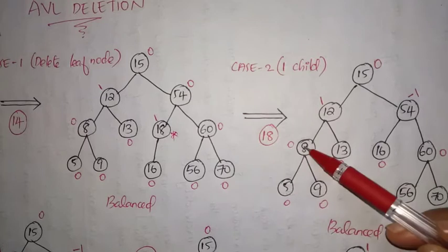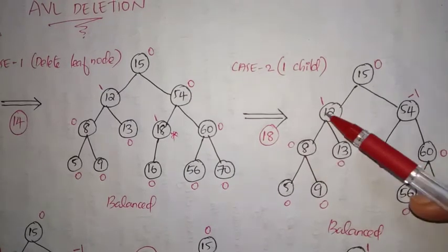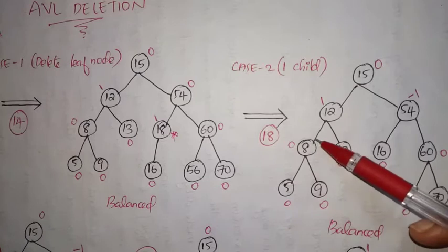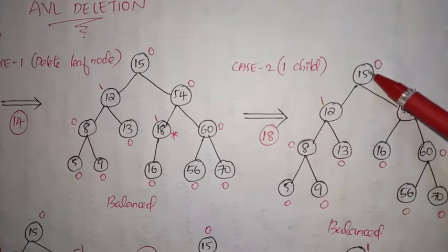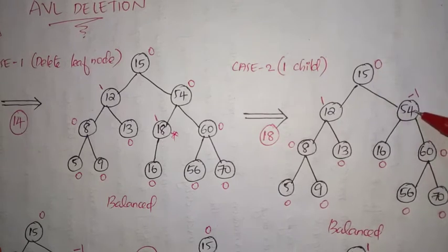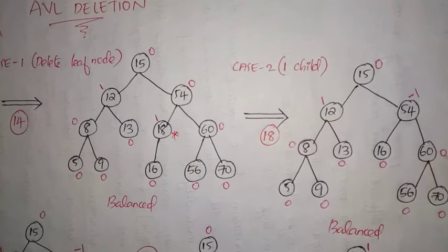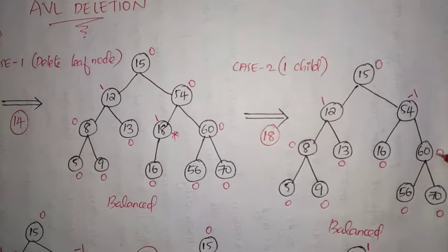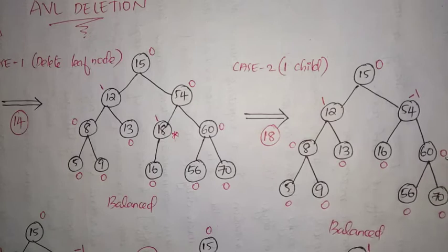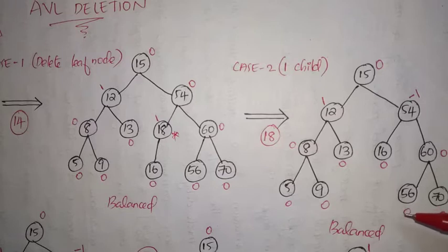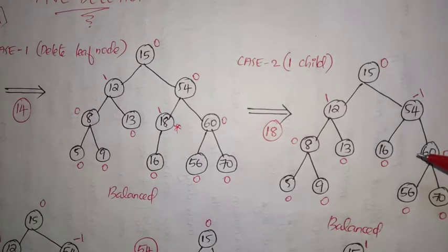Now let's recalculate the balancing factor. Leaf nodes: 0, 0, 0, 0, 0, 0, 0. Here 1 minus 1 equals 0. This node: 2 minus 1 equals 1. This node: 3 minus 3 equals 0. Here: 0 minus 1 equals minus 1. This node: 1 minus 1 equals 0. Since the balancing factor is either 0, 1, or minus 1 for all nodes, we need not perform any AVL rotation.